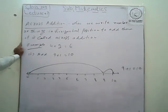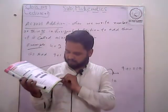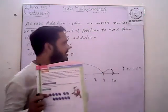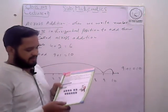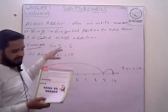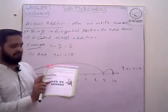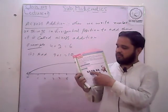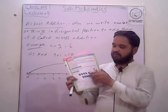So here is an example: 4 plus 2 is equal to 6. Students, you can see your book on page number 37. Here the number of things is shown — the numbers shown here are 3, 1, and 2.